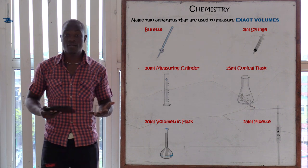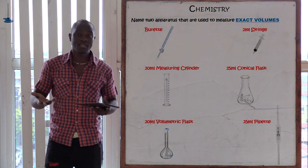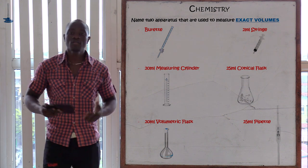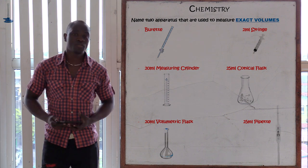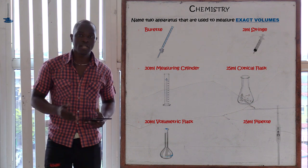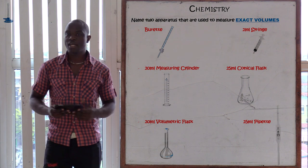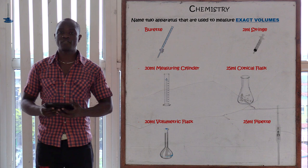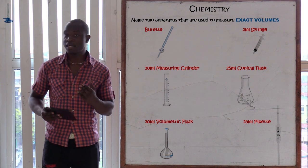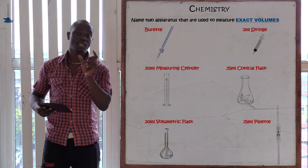Other apparatus we can give: a 20 ml measuring cylinder, 50 ml measuring cylinder, or 100 ml measuring cylinder. You must give the value and then the name of the apparatus. For the syringe, only saying 'syringe' is wrong — you must say 2 ml syringe or 5 ml syringe. For a conical flask, you must say 20 ml or 25 ml conical flask. We also have the volumetric flask, but you must give it a value: 50 ml, 20 ml, or 10 ml volumetric flask. This question is simple but tricky — it asks for exact volume, so you must give an apparatus that measures exact volume.